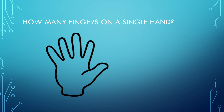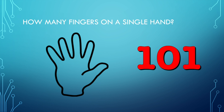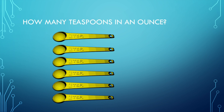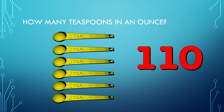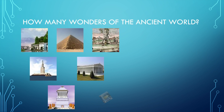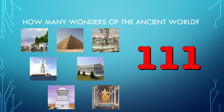How many fingers on a single hand? One zero one. How many teaspoons in an ounce? One one zero. How many wonders of the ancient world? One one one.